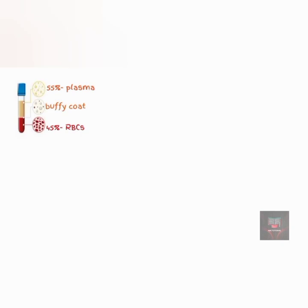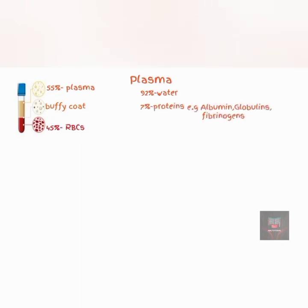The liquid portion of the blood is referred to as the plasma. It is made up of 92% water, 7% proteins such as albumin, globulins, and fibrinogen, and the remaining 1% is made up of electrolytes, enzymes, hormones, and other solutes found in the blood.